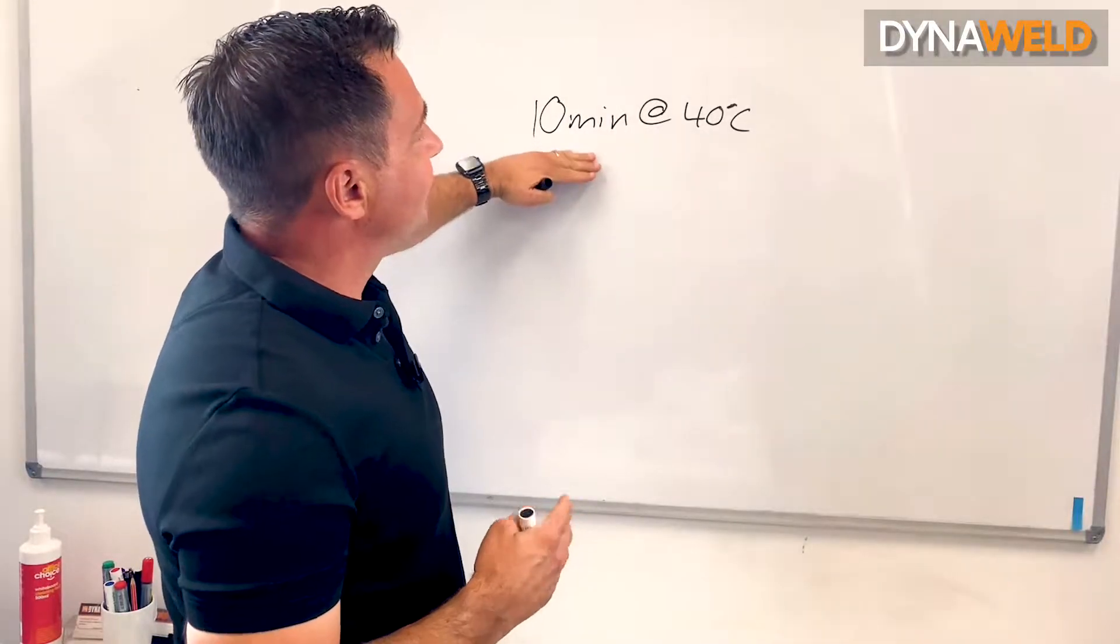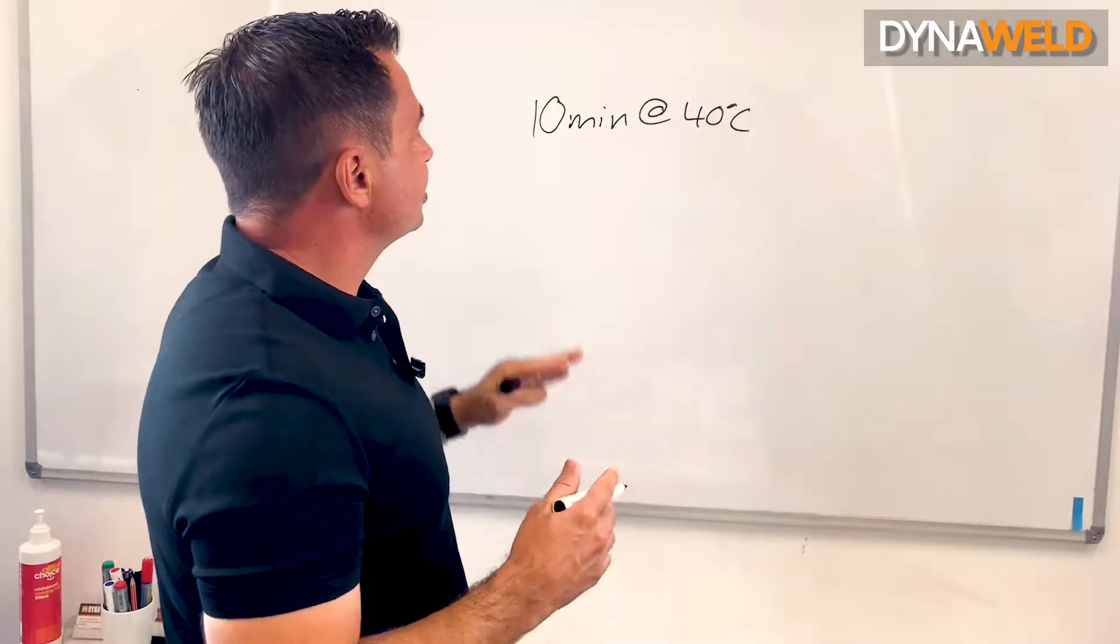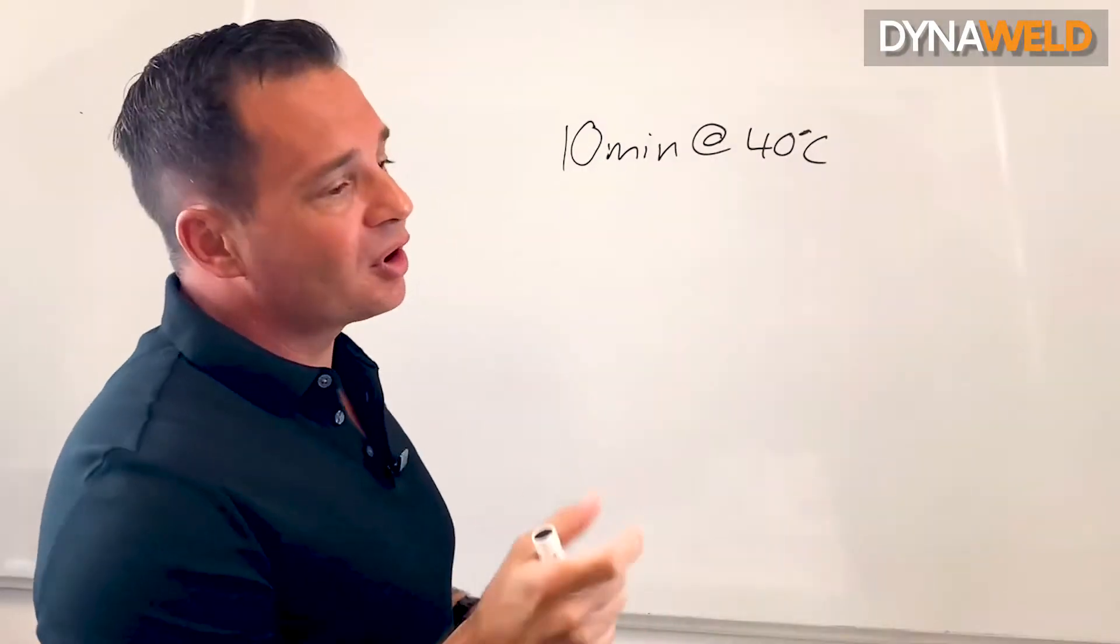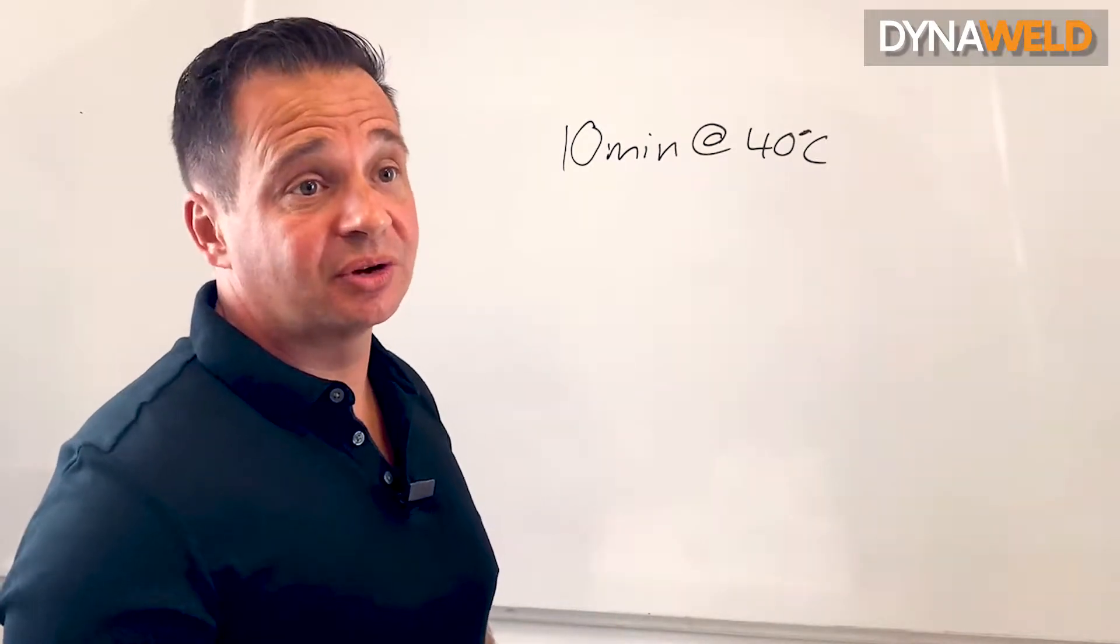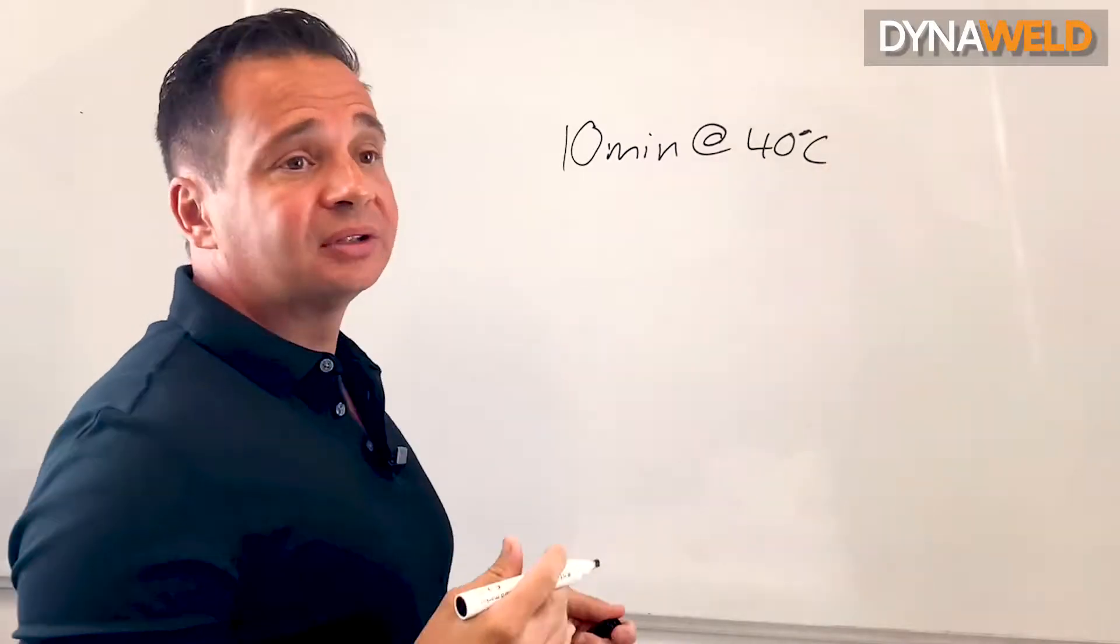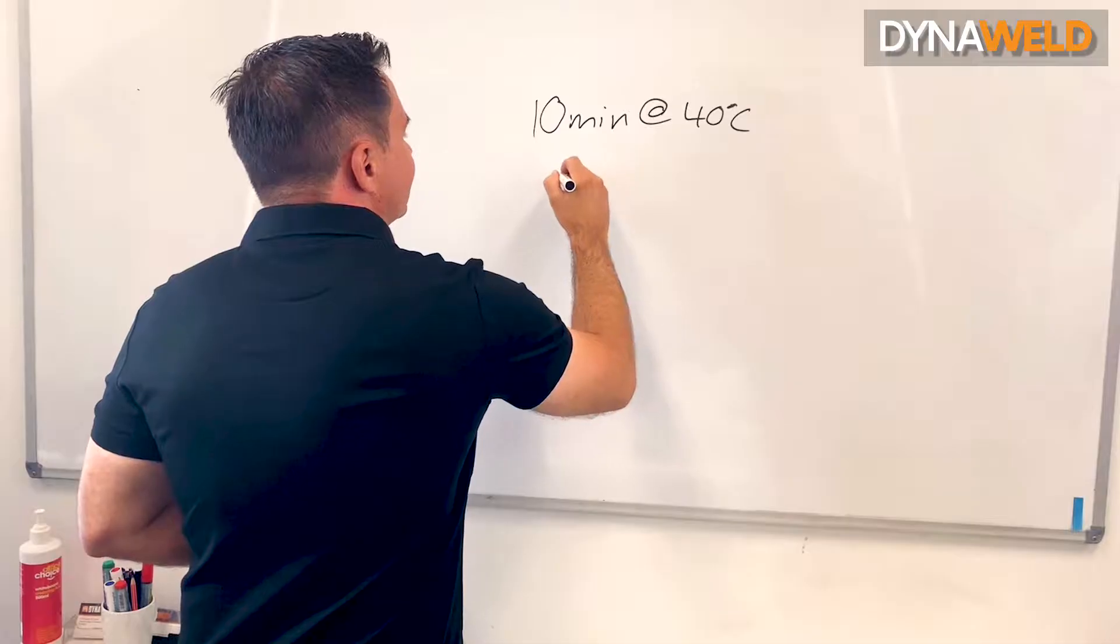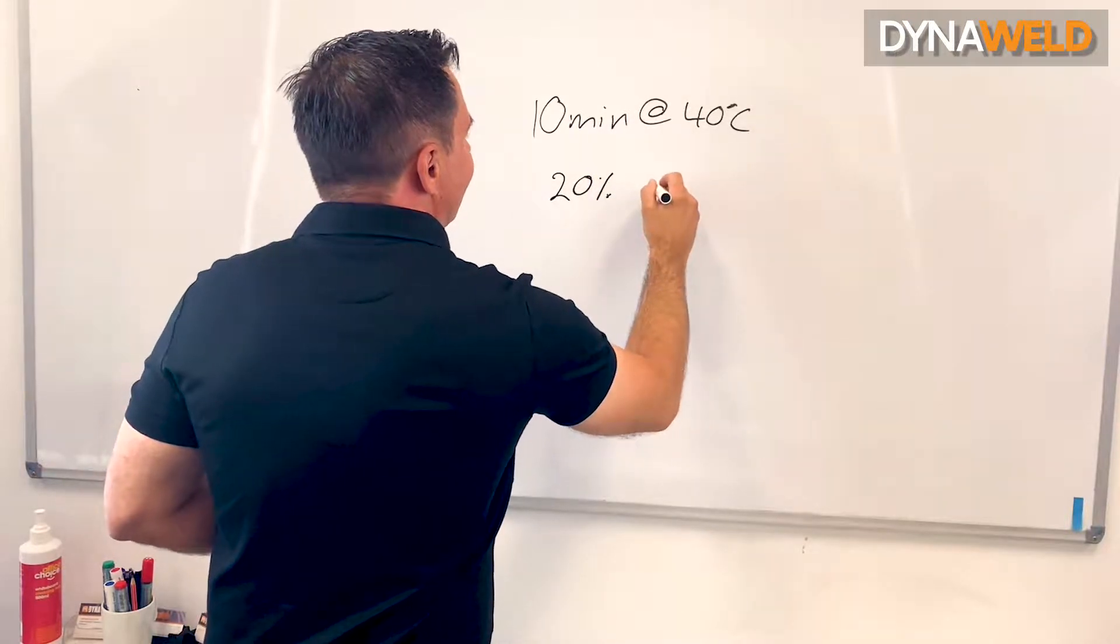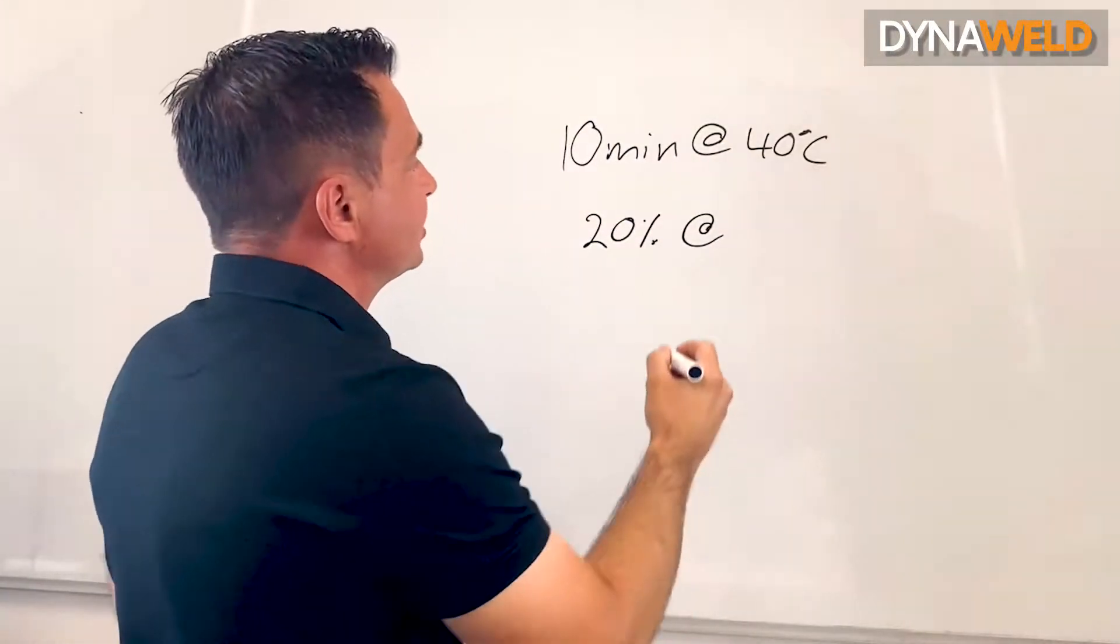You've got a 10-minute period, 40 degrees C. A duty cycle is a measurement of time at a particular amperage, and the time is expressed as a percentage on the specification plate of a welder. A DIY welder, a smaller welder would potentially have a 20% duty cycle at the maximum amperage of the machine.